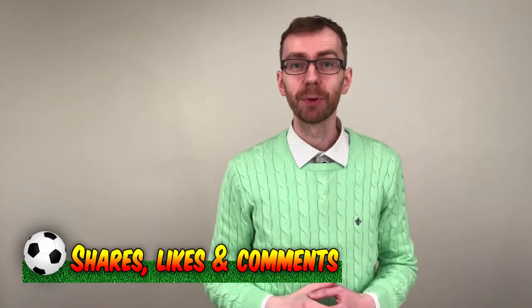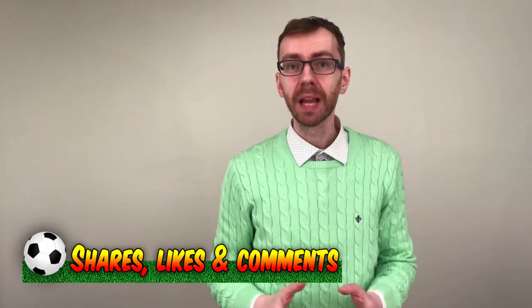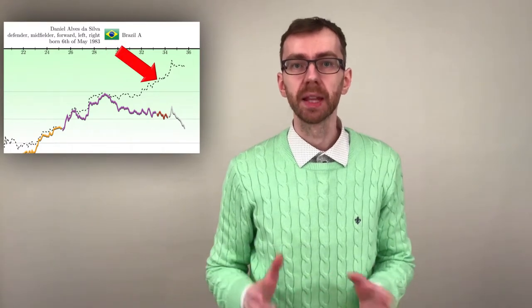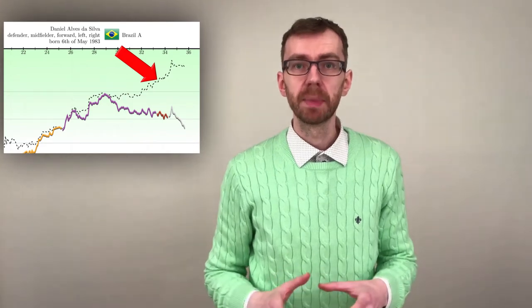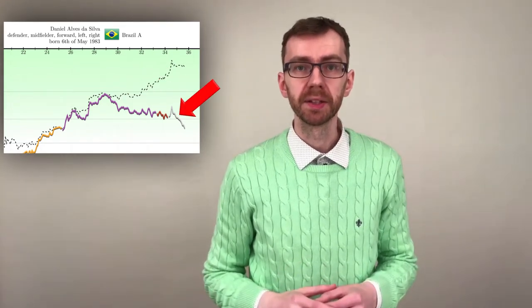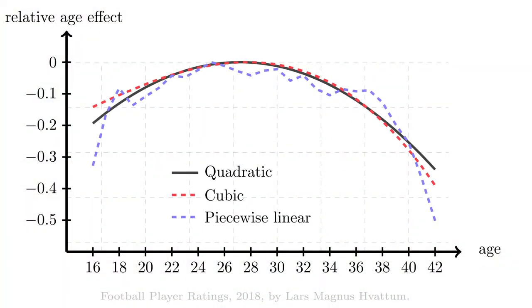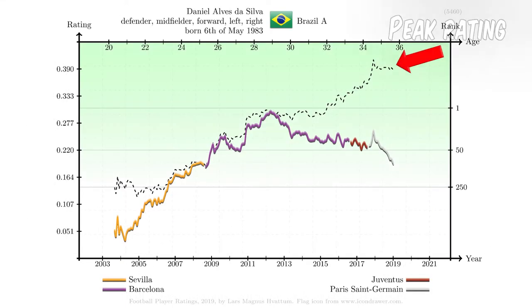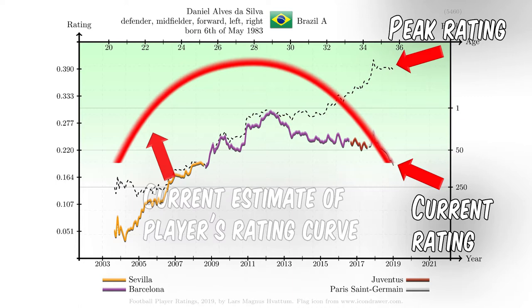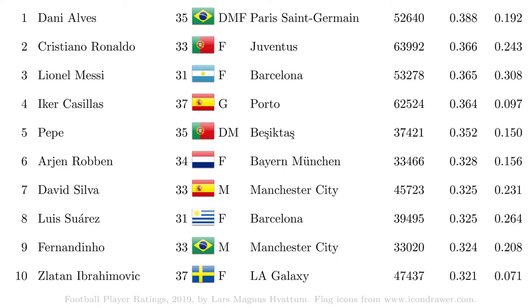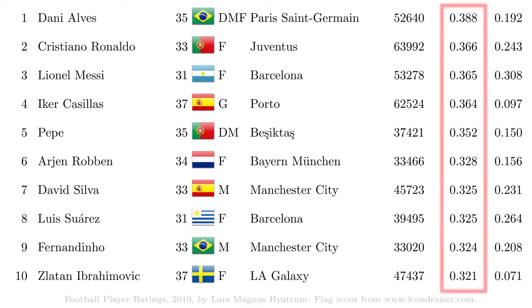I have one more list to show you before we end this. Recall how we discussed the estimated peak ratings of Dani Alves and Cristiano Ronaldo. The top 100 list presented is based on the estimated current ratings of the players. However, based on the current rating and the expected development based on the general age curve for players, we can also calculate the peak rating of the players, assuming that they have performed in line with the general age curve. Here are the top 10 players according to their estimated peak rating.